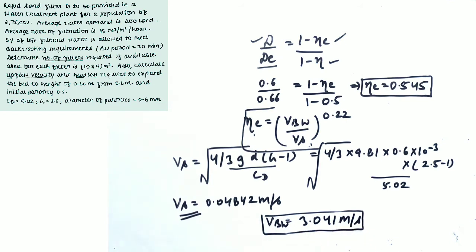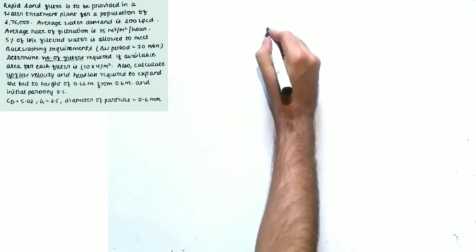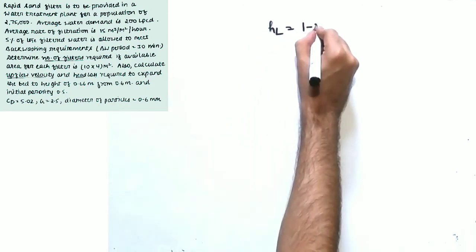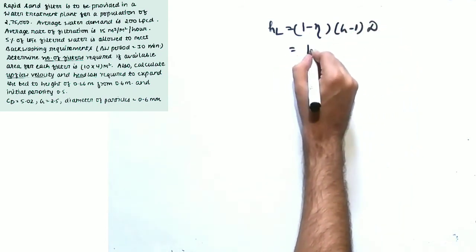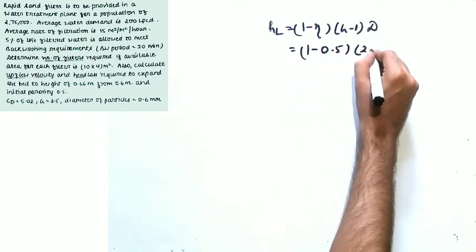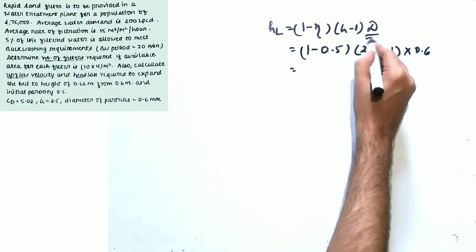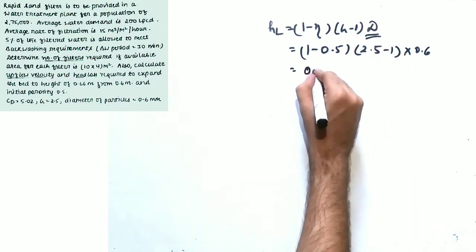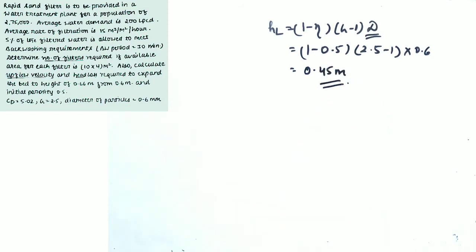The examiner can confuse you by asking for the upflow velocity rather than the backwashing velocity — but they are the same. For head loss, the formula is: H_L = (1 − η) × (G − 1) × d. Substituting: (1 − 0.5) × (2.5 − 1) × 0.6 = 0.45 meters. The units are the same as d (meters). So H_L = 0.45 m. This was the last part asked in the question.